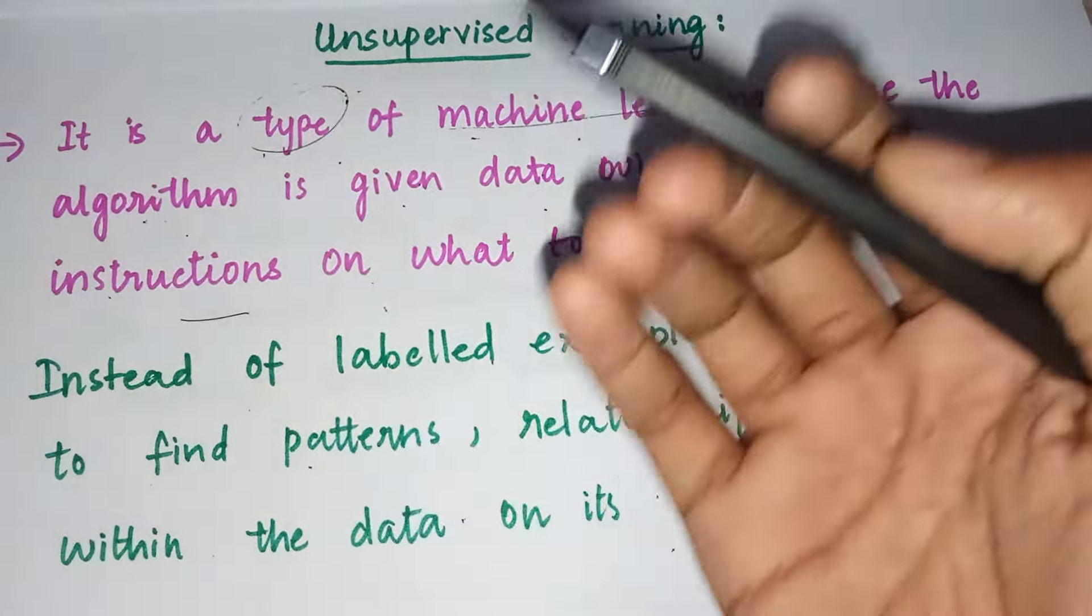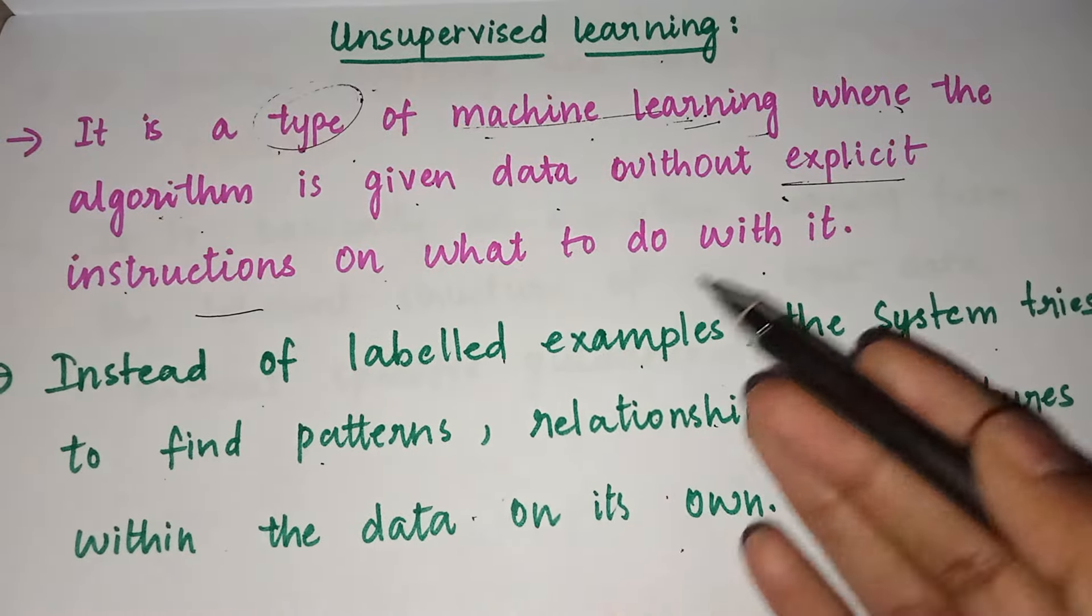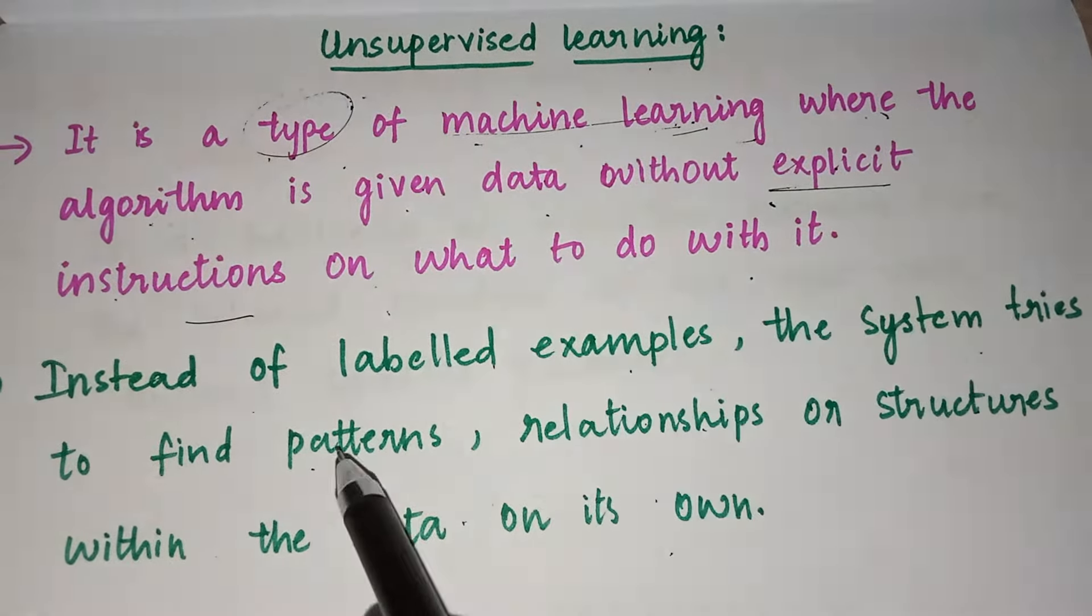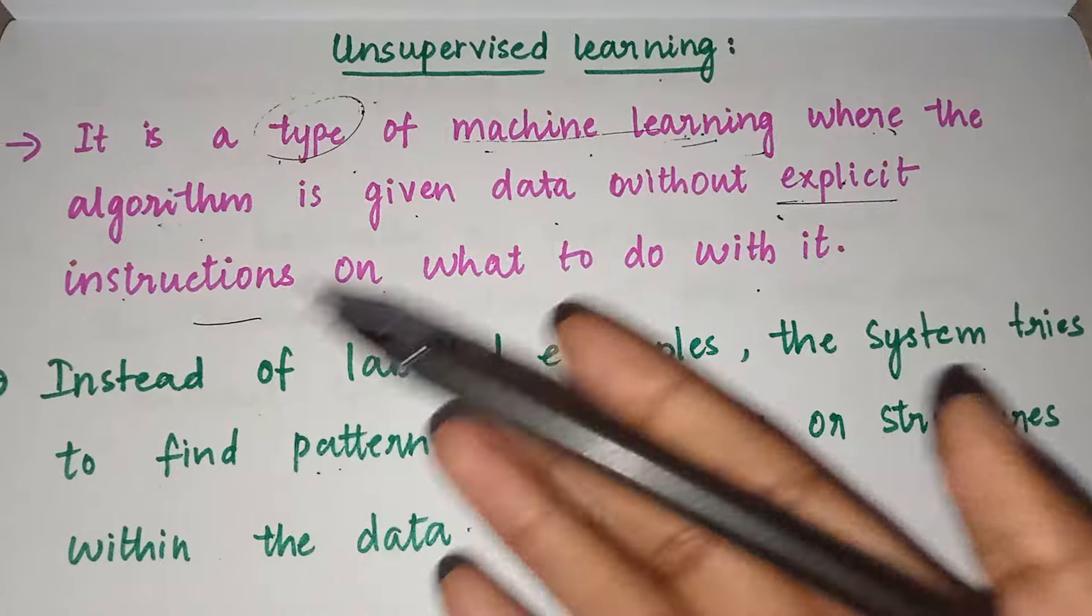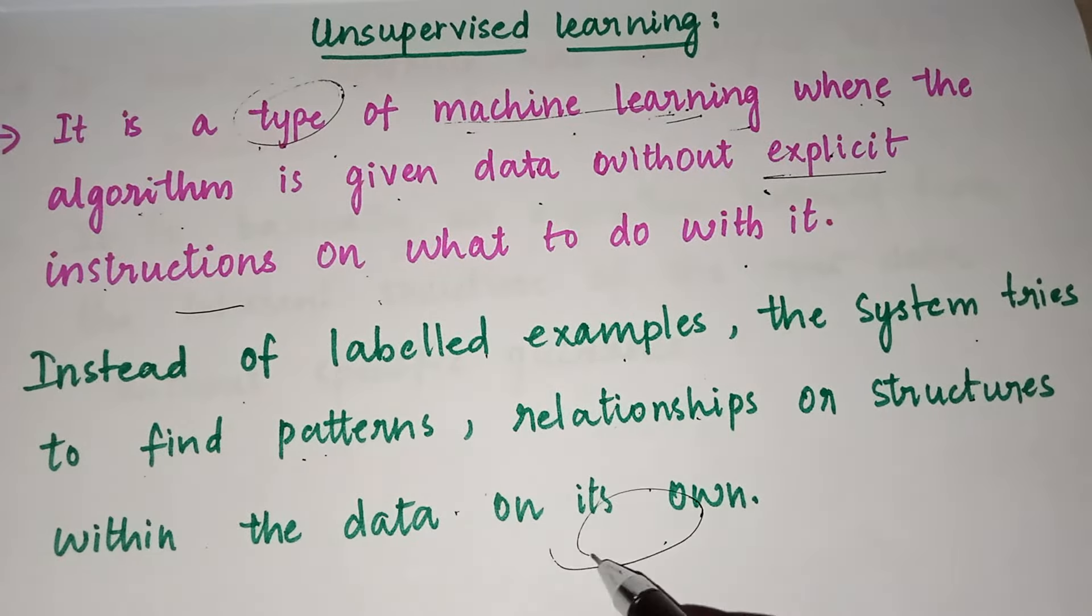show, but instead it will show something related to it, something that has been trained on. So it will try to find some related patterns, some relationships, or some structures within the data on its own. Whatever